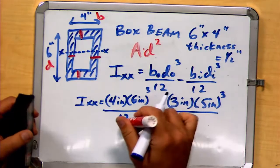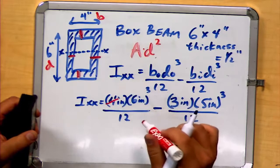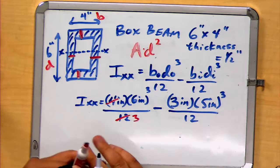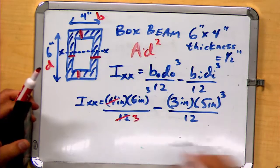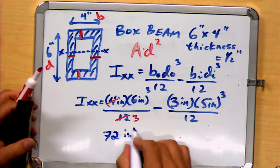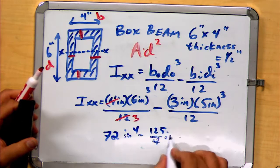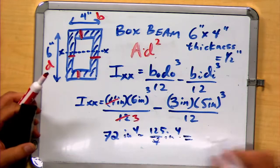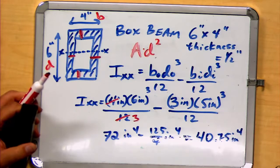We might want to do a little bit of cancellation here if we want to simplify our values. Divide this 4 here, and we end up with a 3. And if we go ahead and do that multiplication, we end up with a value of 72 inches to the fourth minus 125 over 4 inches to the fourth, or if we do the math there, 40.75 inches to the fourth.